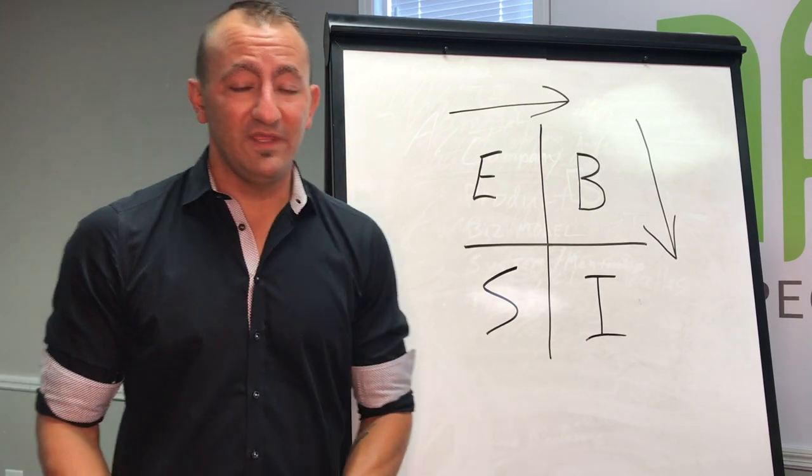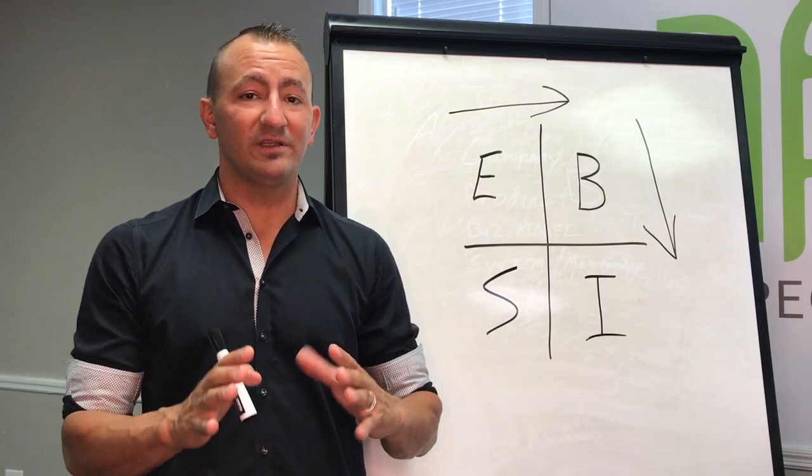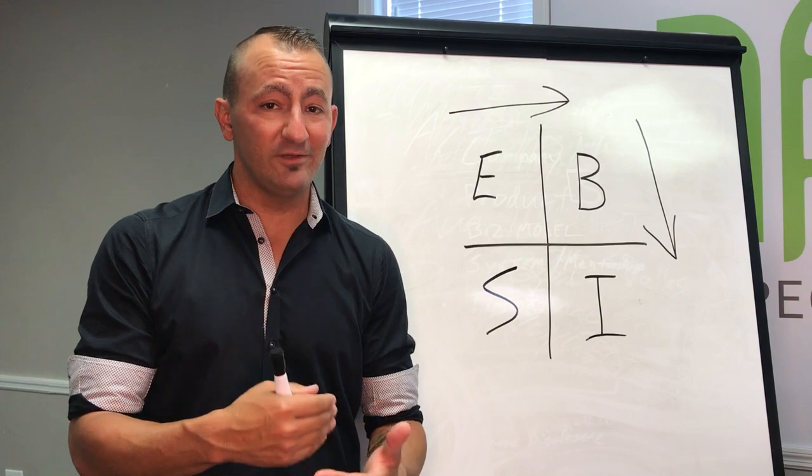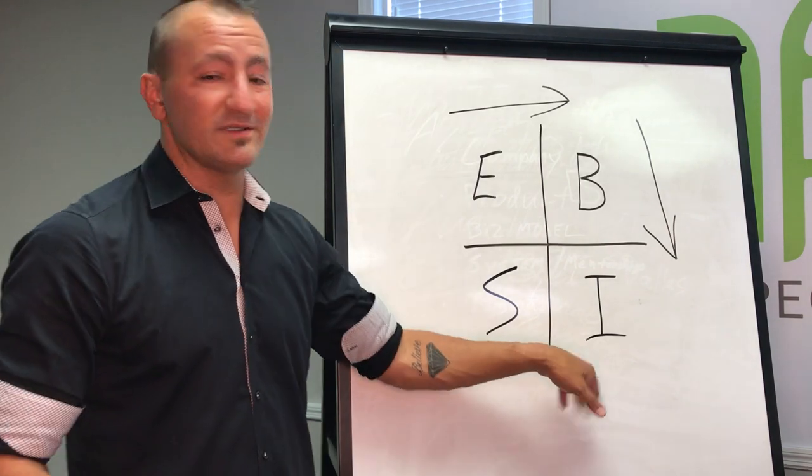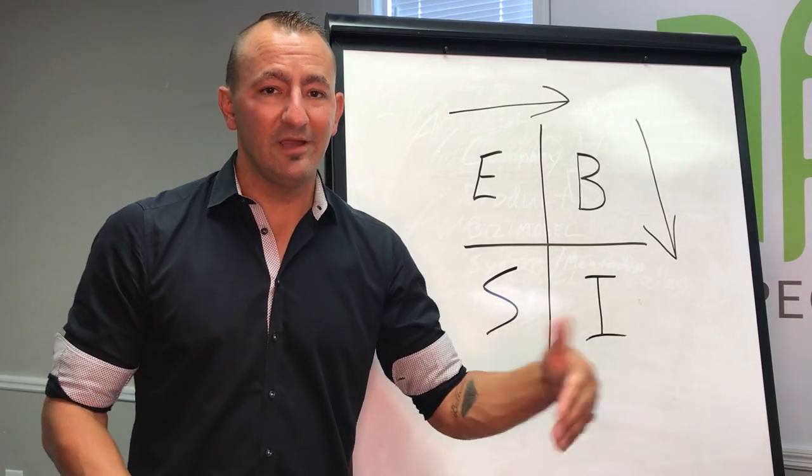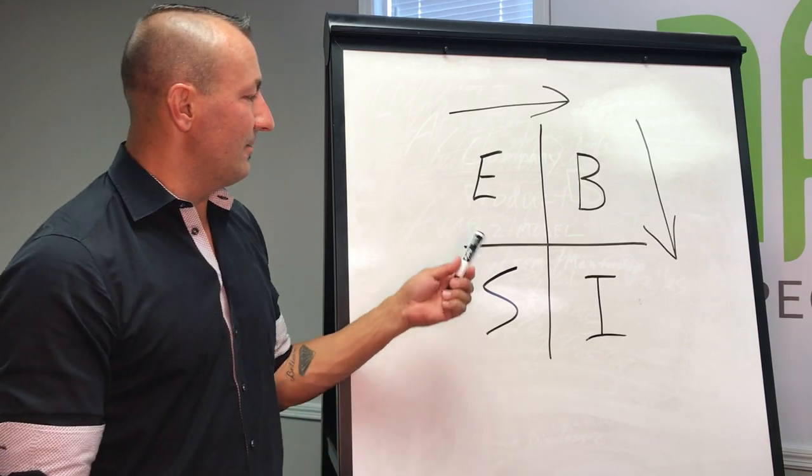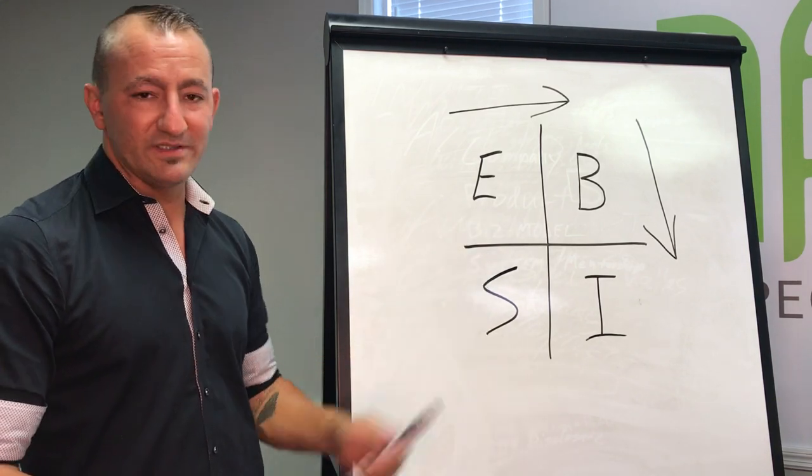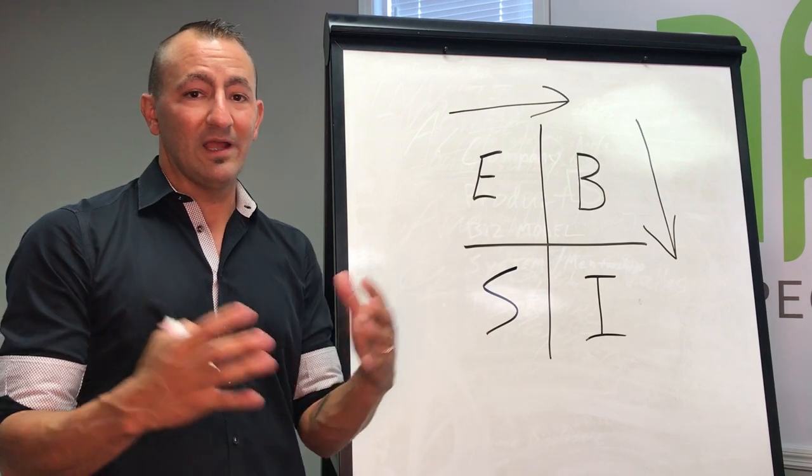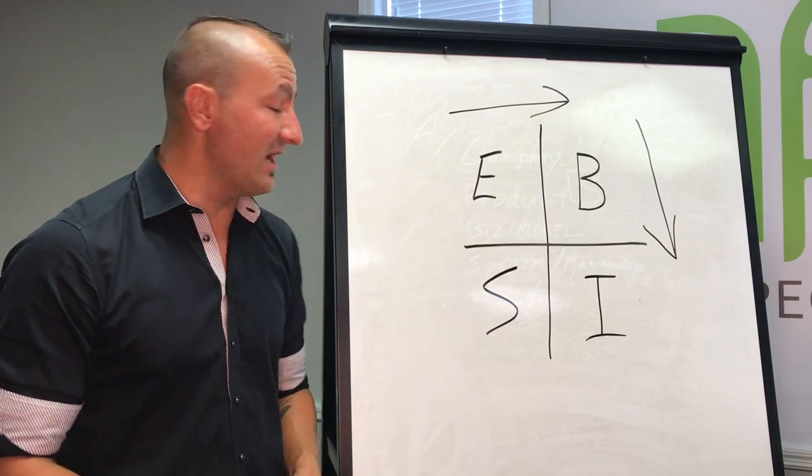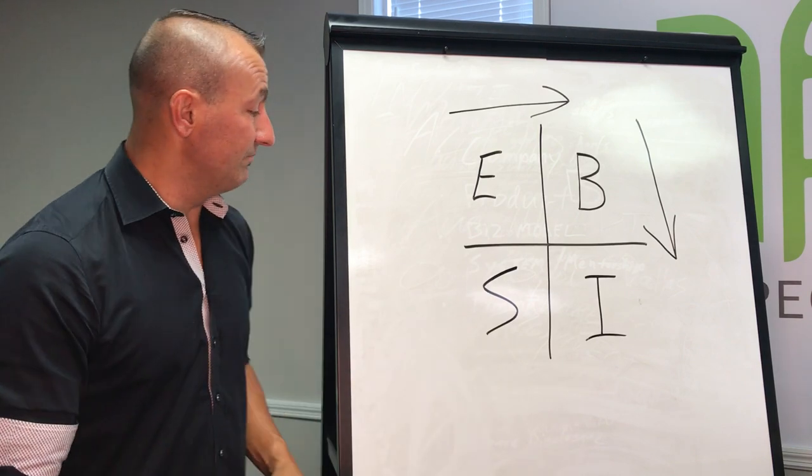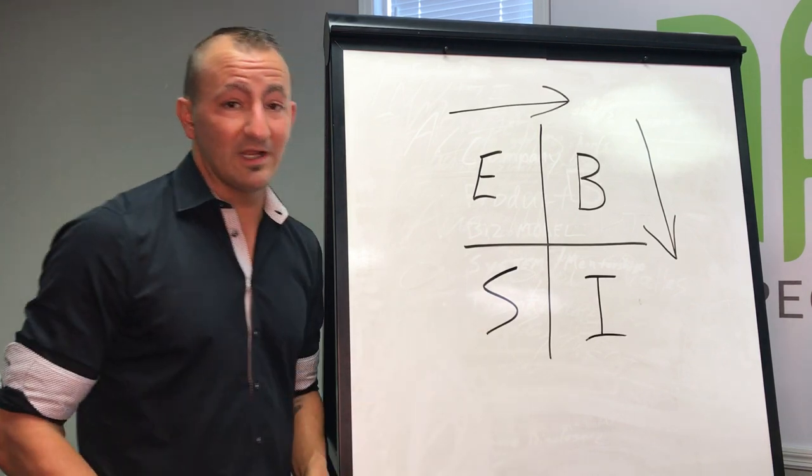The I portion of the cash flow quadrant is where you want to be, because this is where your money starts to make money for you. Heather and I, my wife and I, we've been blessed to move from employee to small business owners. When I was out of college I worked for someone else, I had a job, and then I became a small business owner.